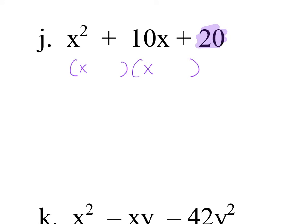Now checking for factors of 20 that add to 10: 4 times 5 gives a sum of 9; 2 times 10 gives 12; and 20 and 1 gives 21. None of these work, so this trinomial is prime.